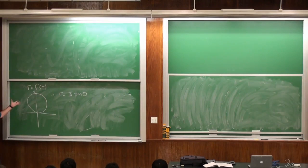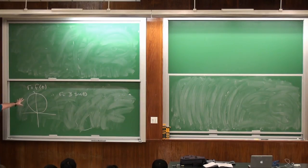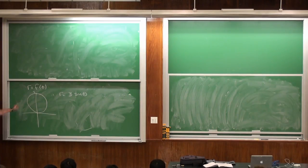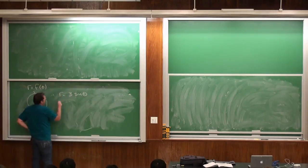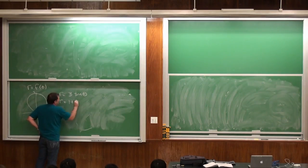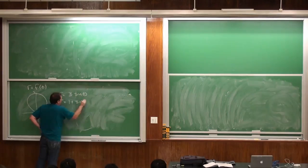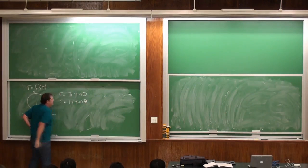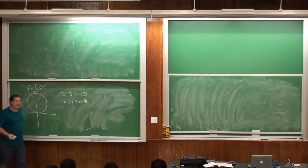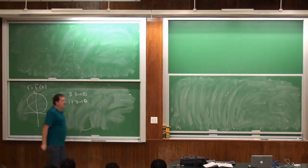We know the area of this circle — it's 9π over 4 (or as stated, 9π squared). Let's also look at another curve: r equals 1 plus sine theta. This is one that we've seen before.